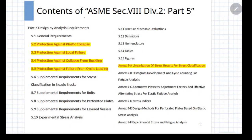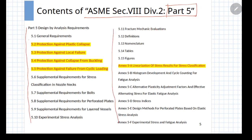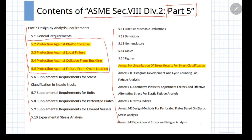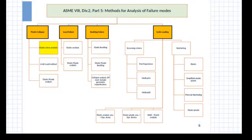Looking at the contents of ASME Section 8 Division 2 Part 5, one would find many requirements, of which certain checks are mandatory and our session will deal with those. The four essential checks are: the plastic collapse check, the local failure check, the buckling failure check, and the cyclic loading check.